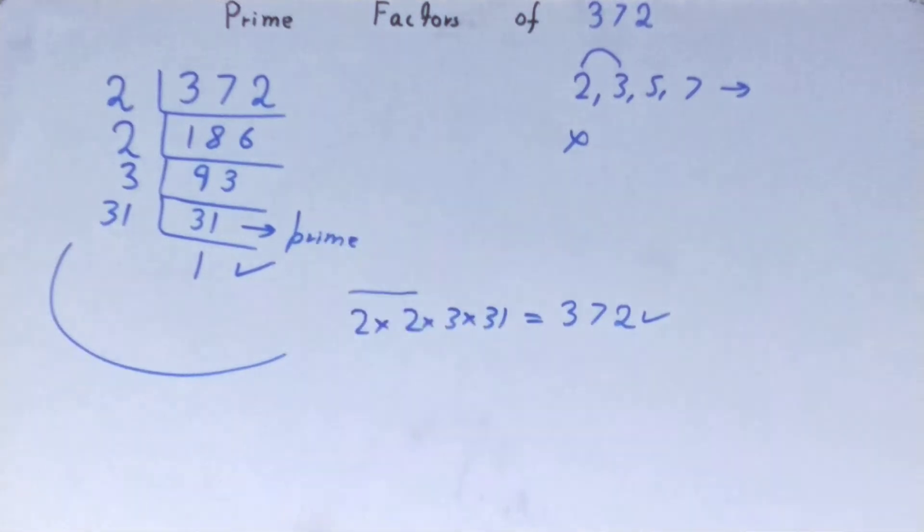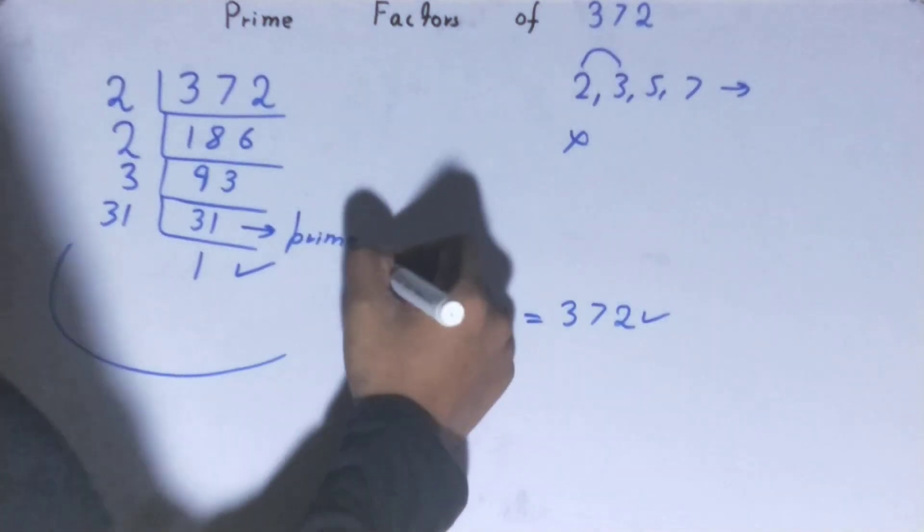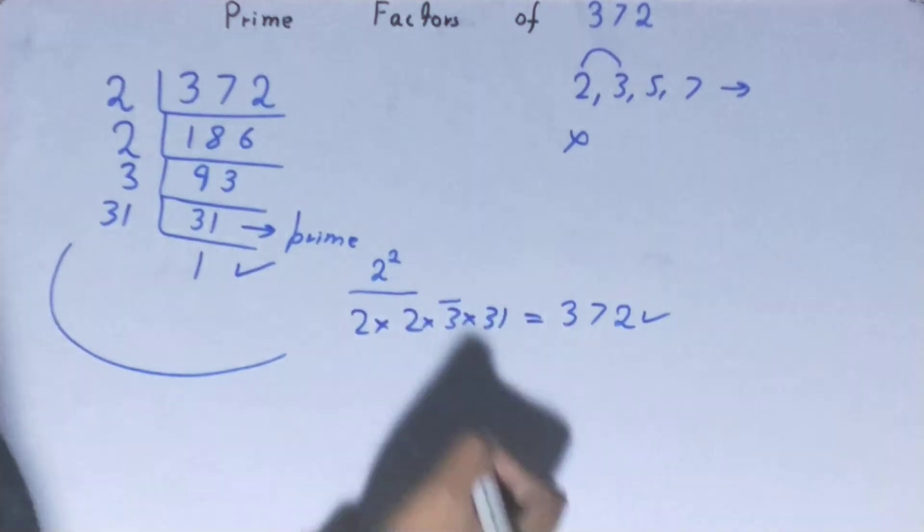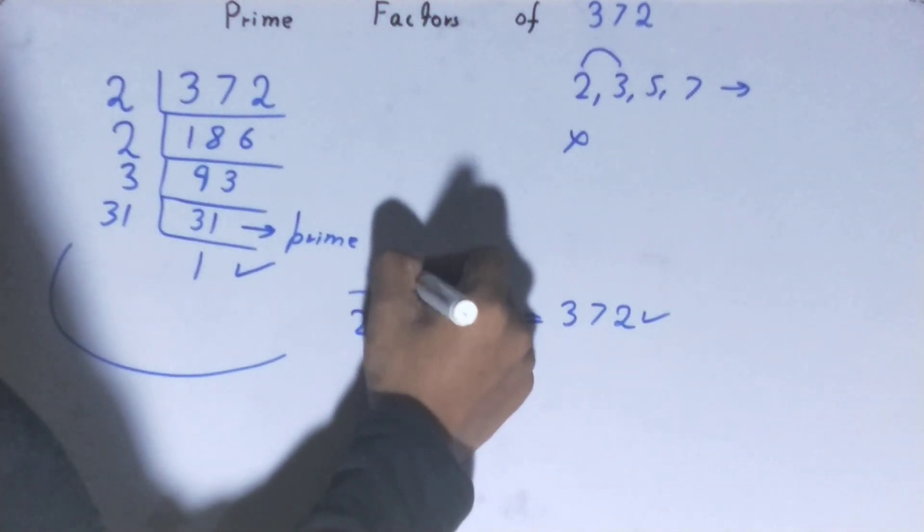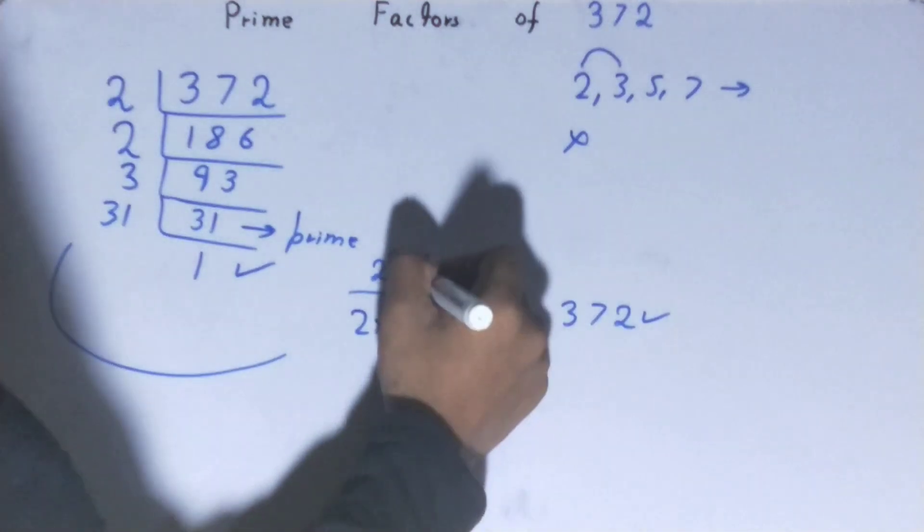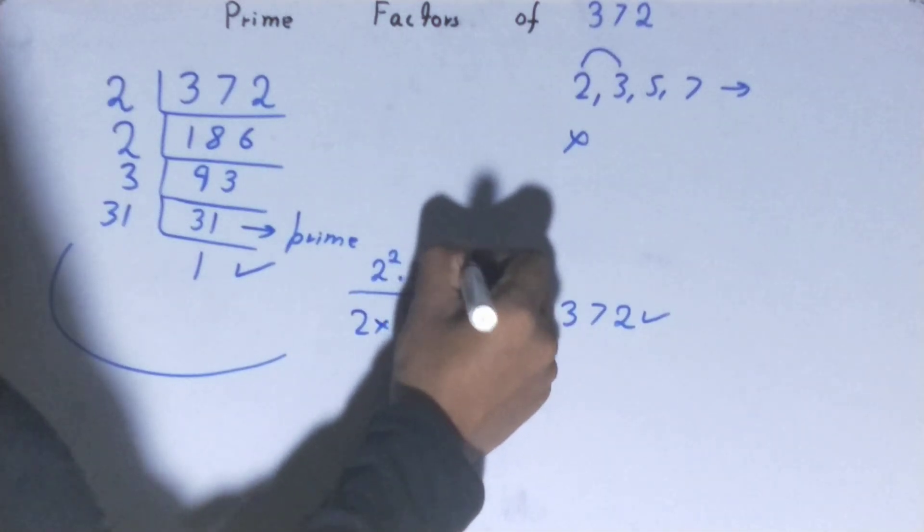You can also write it in a different way. You have 2 times 2, so you can write it as 2 raised to power 2. You have one time 3, so you can write it as 3 raised to power 1. You have one time 31, so you can write it as 31 raised to power 1.